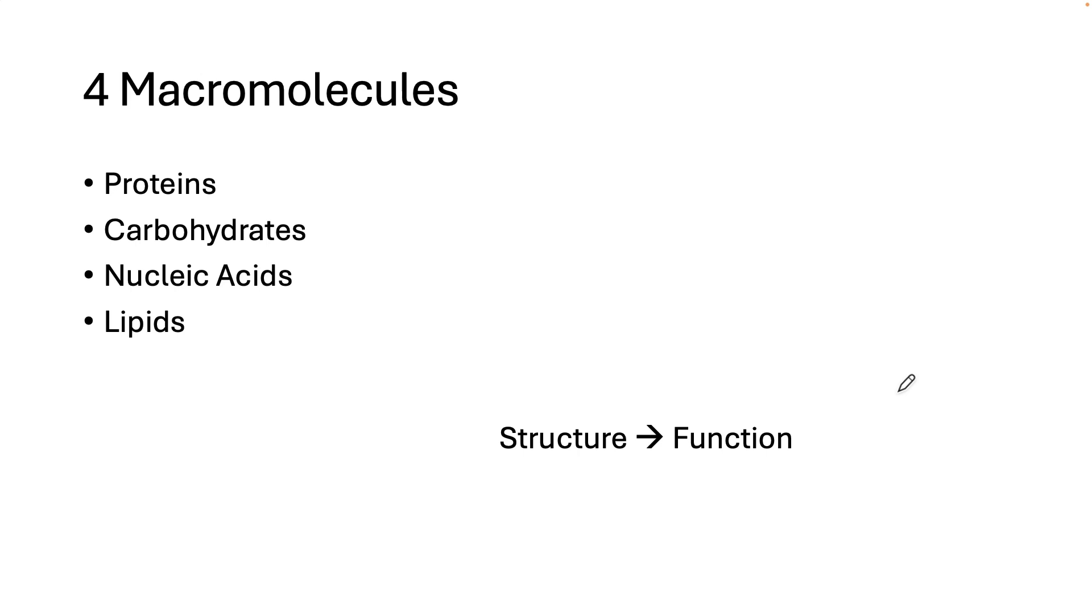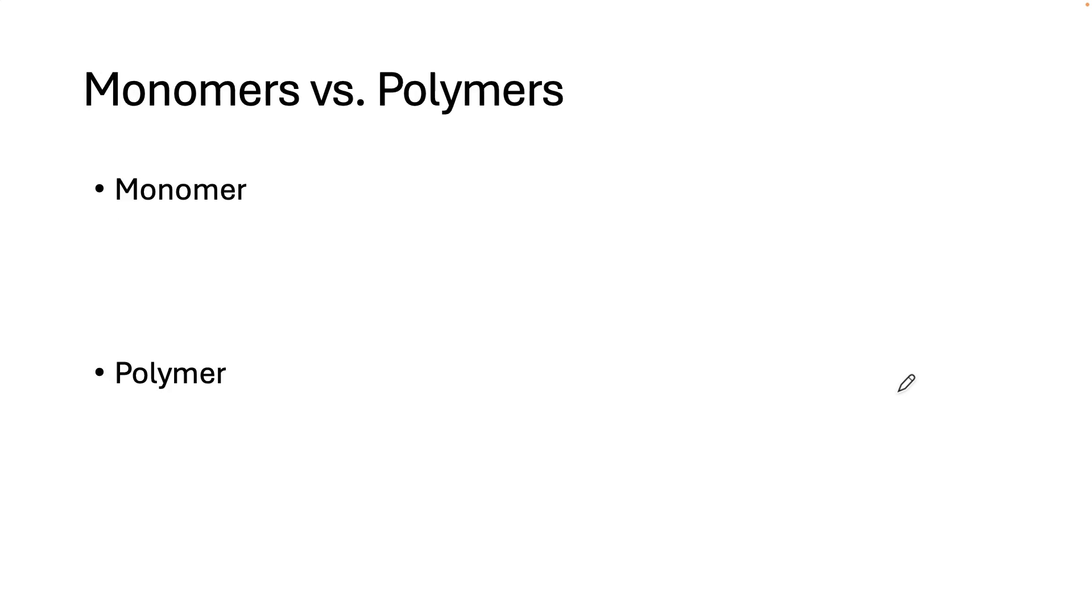If you look at the name, it starts with macro, which means big. Macromolecules are big molecules, but they are actually made up of lots and lots of smaller subunits. These subunits can be called monomers. This makes sense because mono means one.